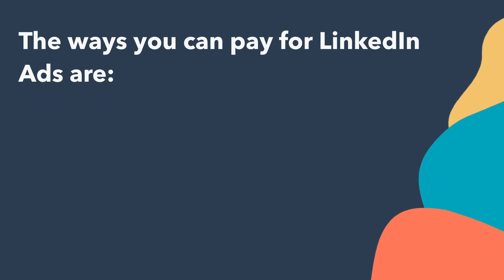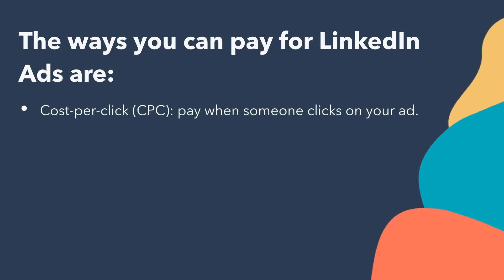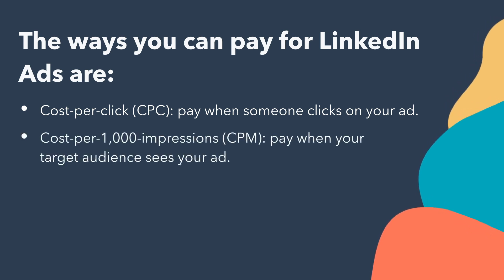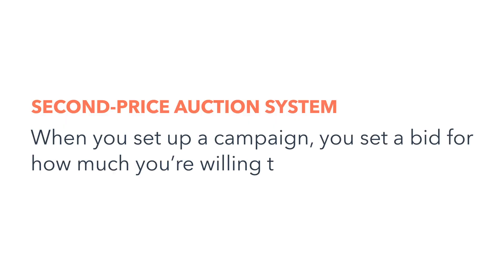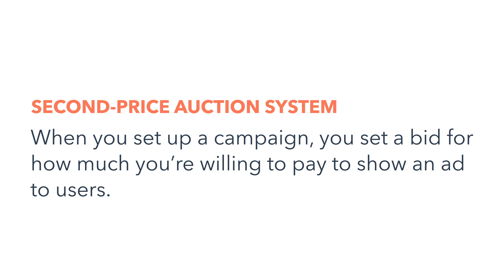Before diving into creating LinkedIn ads, let's review how budgeting and bidding work. The ways you can pay for LinkedIn ads are: cost per click (CPC) — pay when someone clicks your ad; cost per thousand impressions (CPM) — pay when your target audience sees your ad; and cost per send (CPS) — pay when message ads are delivered successfully. LinkedIn sponsored content ads work on a second-price auction system. You set a bid for how much you're willing to pay to show an ad, and LinkedIn decides whose ad to place based on the highest bid and past campaign performance. You only pay the amount needed to beat the second-highest bidder.